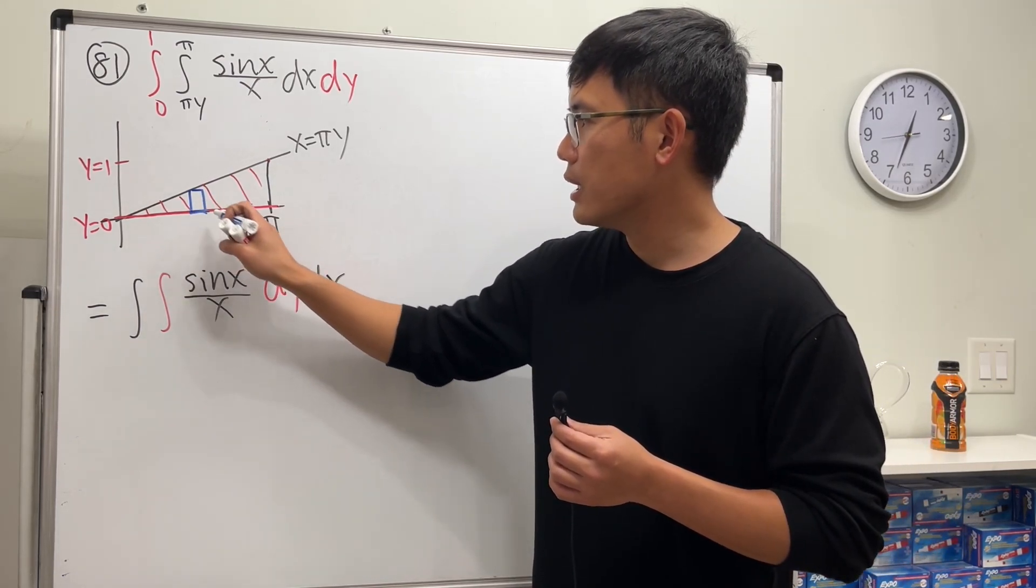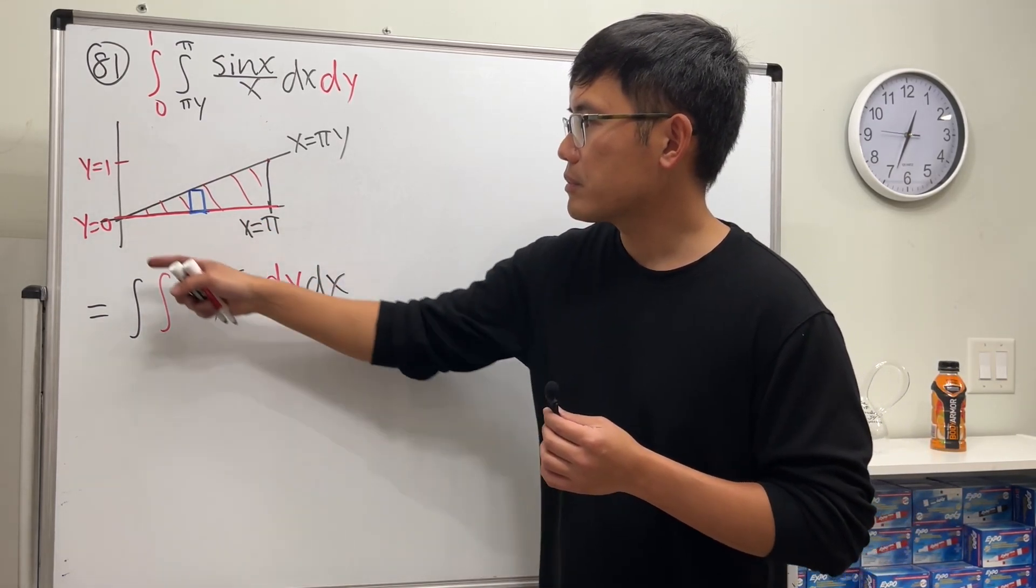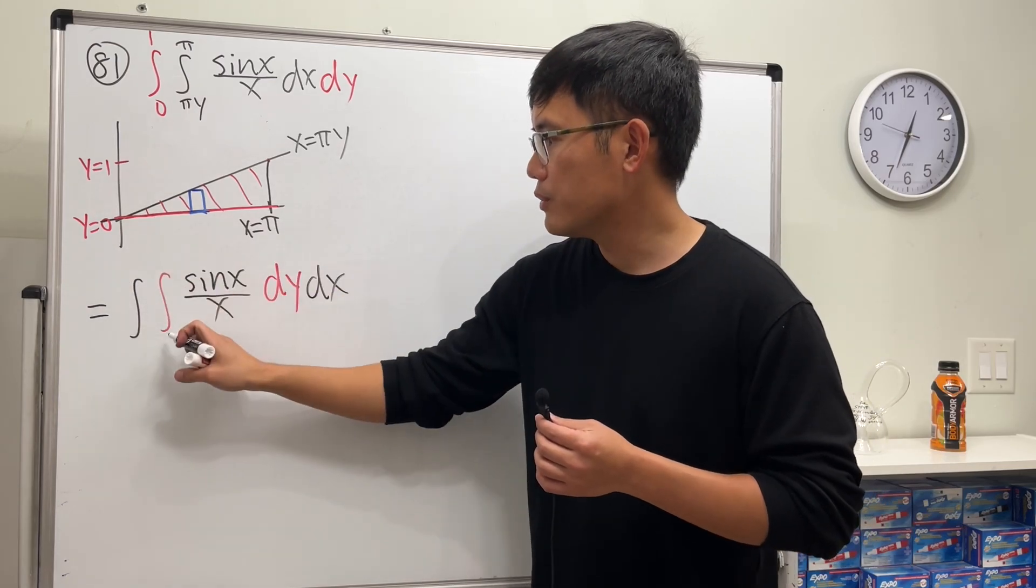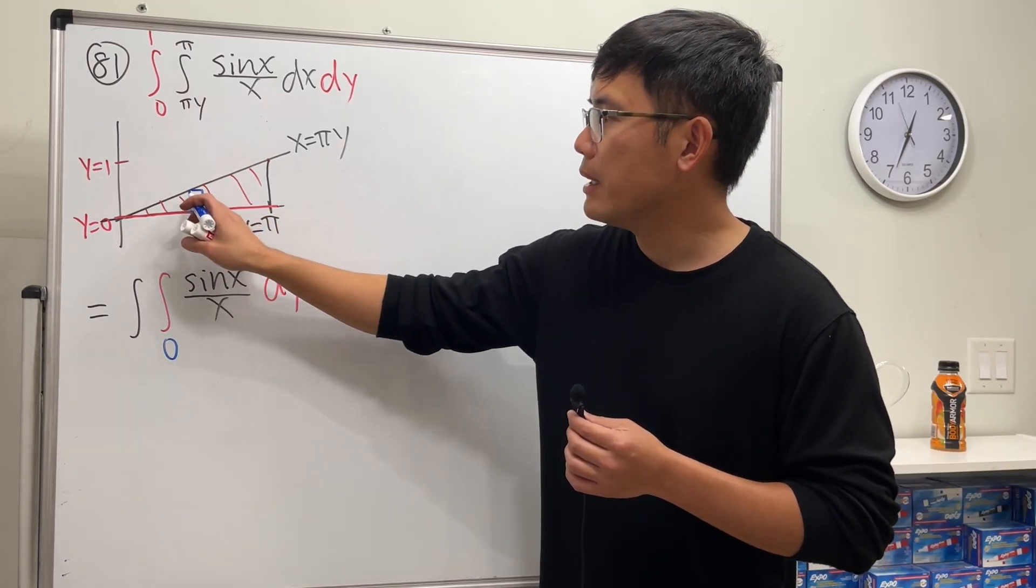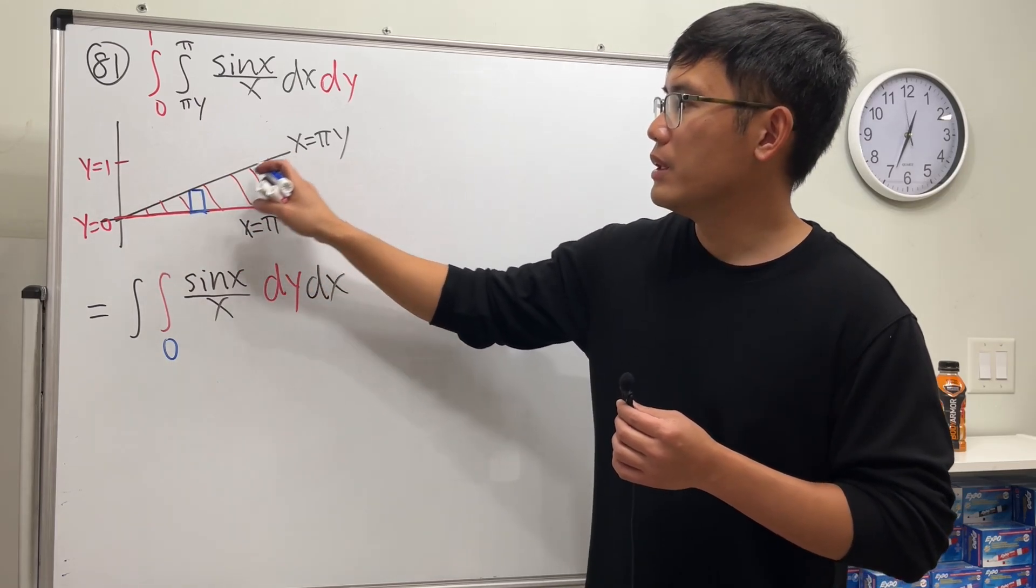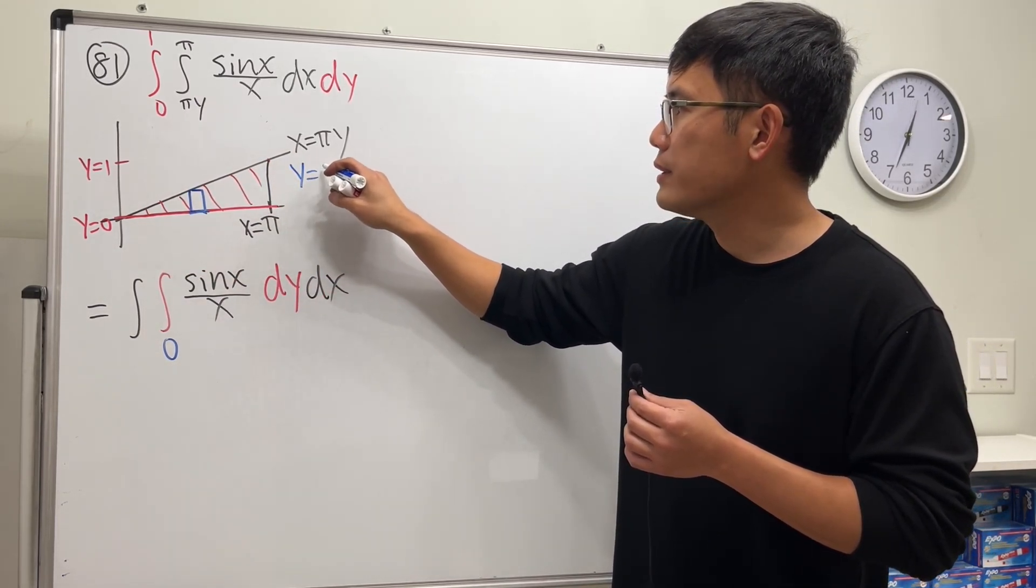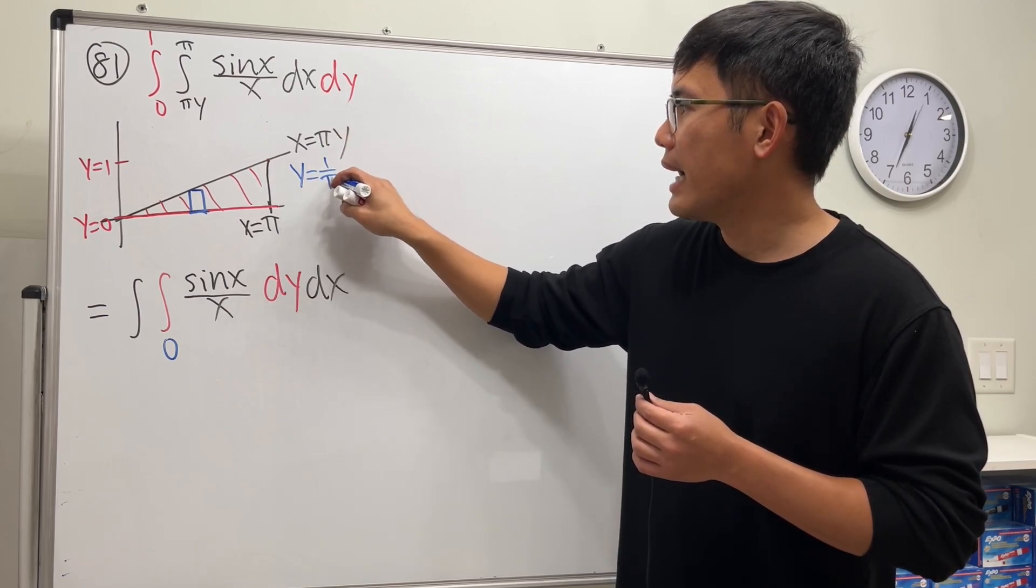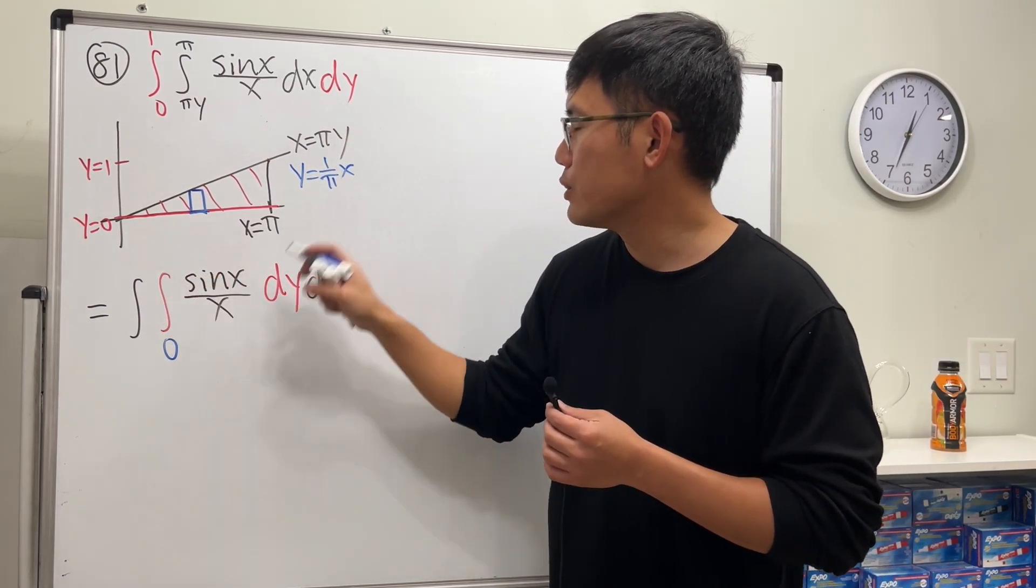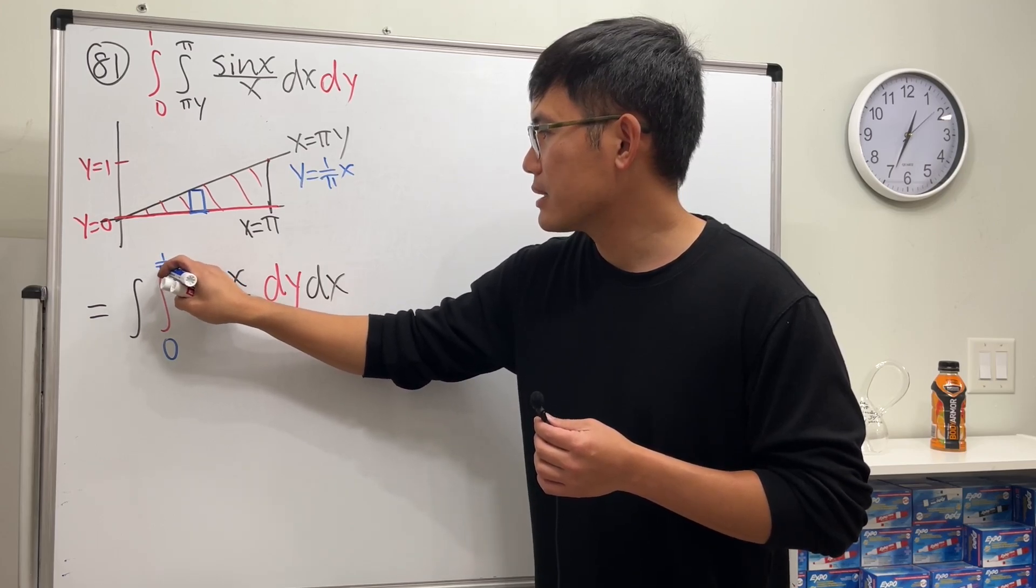So look at this right here. First for the blue part, you see y goes from zero from the bottom, and then once we reach to the top, this y value, well it's this equation. We will have to isolate this y, and y equals one over π times x. And I will just write, yeah, one over π times x.